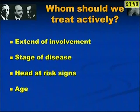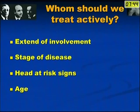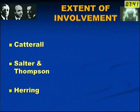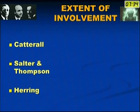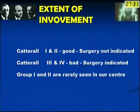So whom should we treat actively? It depends on the extent of involvement, stage of the disease, at-risk signs, and the age of the patient. The extent of disease has been analyzed by Catterall classification, Salter's classification, and Herring's classification. I will not go into the details due to lack of time.